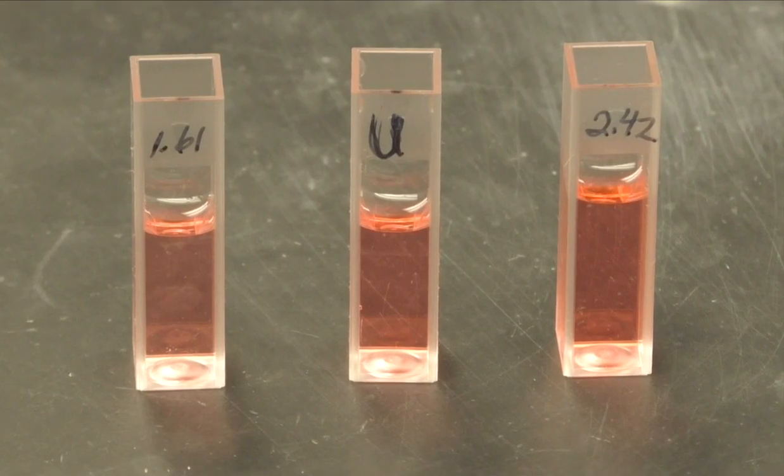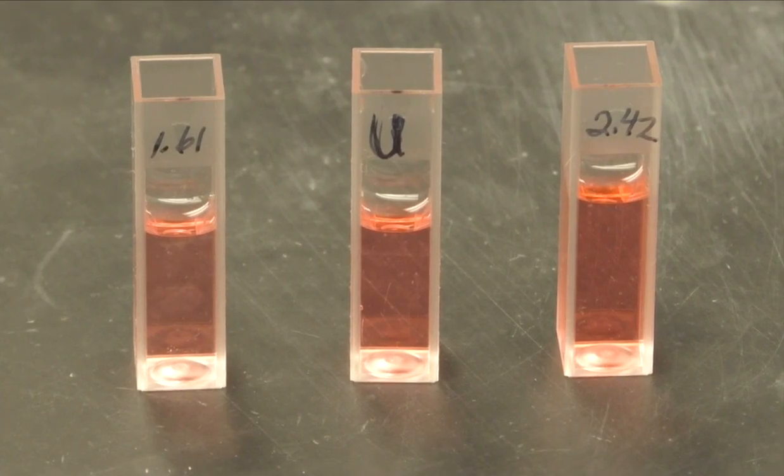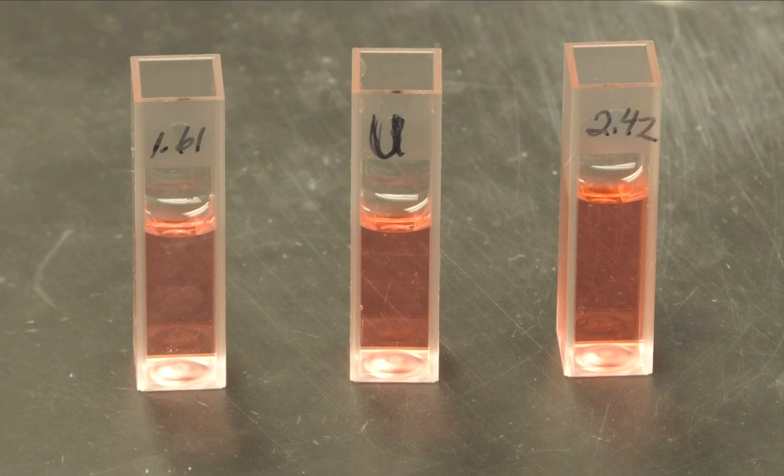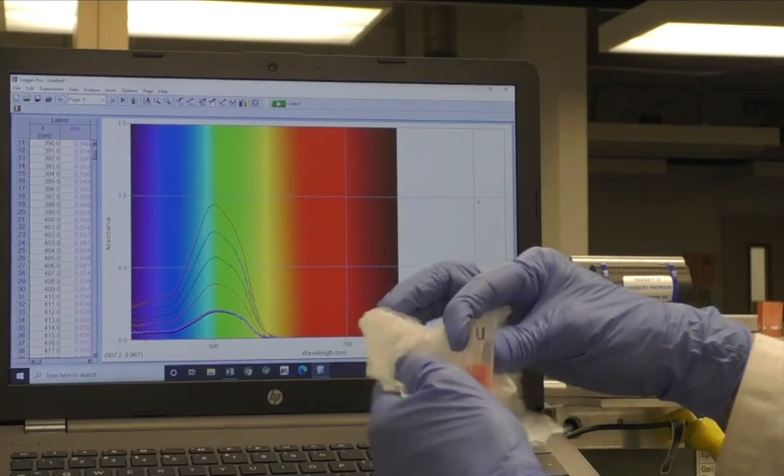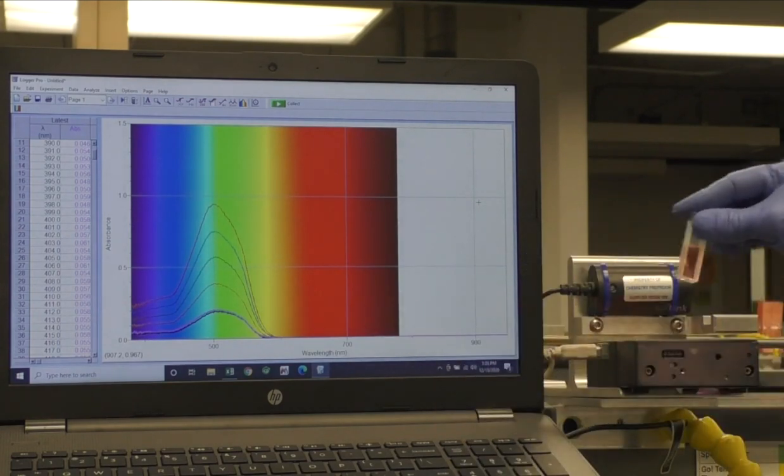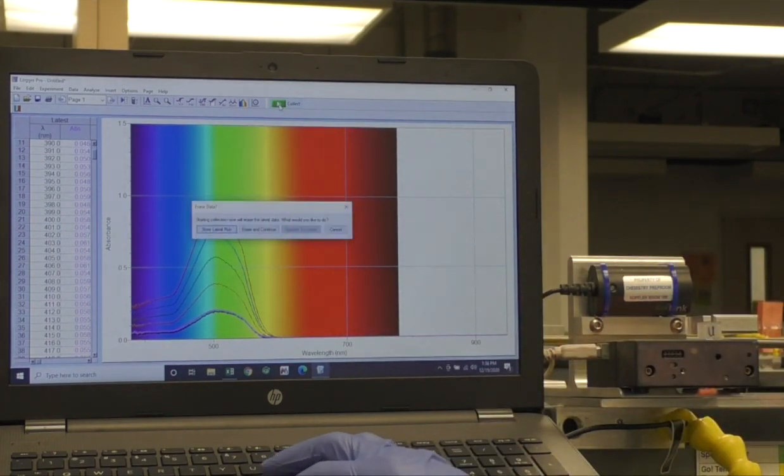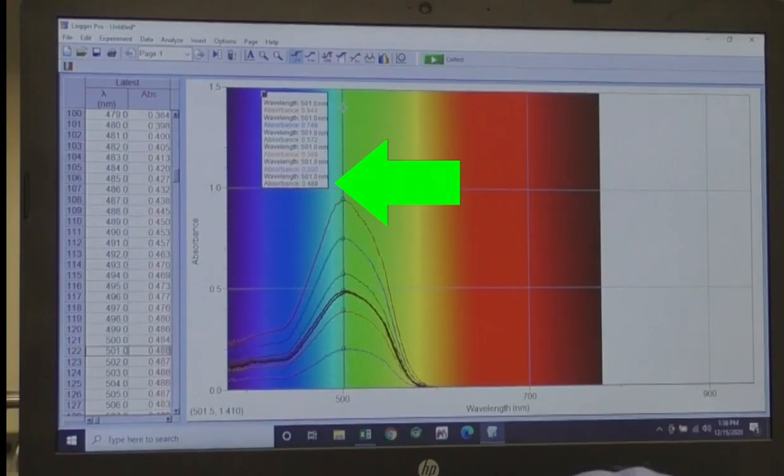If you have a solution of unknown concentration, take a reading of it at the same time as your known solutions. Here you can see our unknown looks like it is between our created dilutions with concentrations of 1.61 × 10⁻⁵ and 2.42 × 10⁻⁵. Knowing their absorbances are 0.389 and 0.572, let's see what our unknown is. It's 0.488, exactly what we expected.